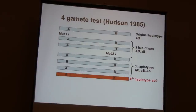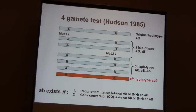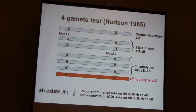Suppose you were to look at two particular SNPs and nonetheless see all four combinations of alleles. Then you would conclude that one of two things have happened: either some recurrent mutation had conspired to create the fourth possible haplotype, or, what turns out to be more prevalent, the cut-and-paste action of a gene conversion or crossover will have made that fourth haplotype.